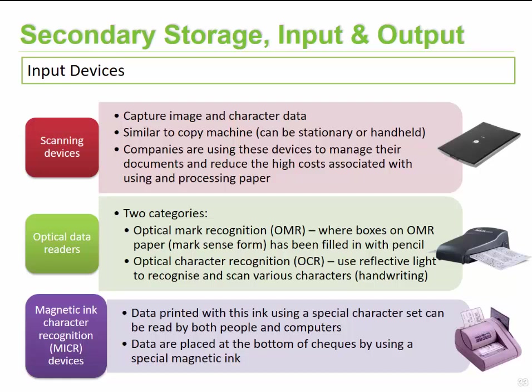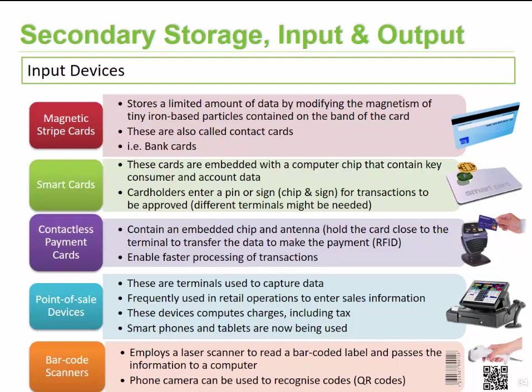The next input device is Magnetic Ink Character Recognition, or MICR. We find these less frequently today — typically in the older days of printed checkbooks. The account number at the bottom of a checkbook was printed with magnetized ink, and whenever the check was sent through a device, it could pick up the information contained within that magnetized ink and retrieve it.